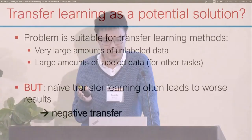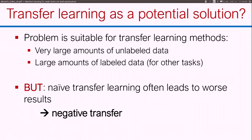Transfer learning could be a natural solution to this, right? Because there's a lot of unlabeled data, and also a lot of labeled data for other kinds of properties, maybe not for the ones you're interested in. But the issue is that we've seen empirically that just naively applying transfer learning approaches such as multitask learning or pre-training can in a lot of times lead to worse results — we call this negative transfer. And a priori, it's hard to tell whether pre-training or transfer learning could help or hurt your performance.